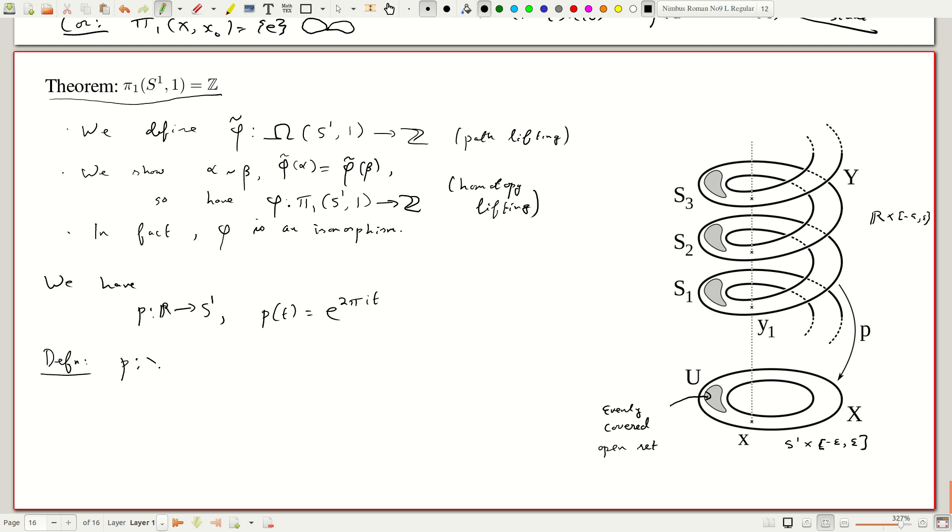Now, this is for an arbitrary map given p from X̂ to X. So, suppose we are given p from X̂ to X and it is continuous. And let us just assume it is surjective because later we will need it to be surjective. OK? Then, suppose I take a subset U. This in X is evenly covered.